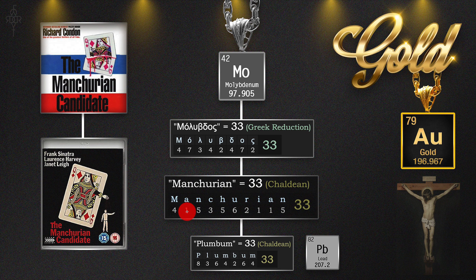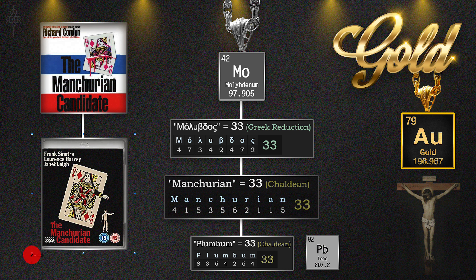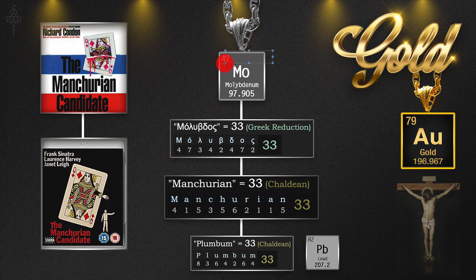This one's going to blow your mind. This book right here, written by Richard Condon, was called The Manchurian Candidate. It was made into a movie in 1962, and then revised in 2004 by Denzel Washington and Liev Schreiber — an amazing movie all about mind control. The reason I'm showing this is because this element right here is called molybdenum, which is Greek for molybdos, which means lead. So you have lead here at number 82, but there are two leads — there's also the 42. Notice they both end in two.